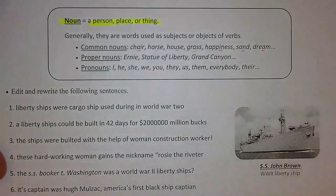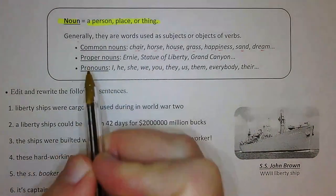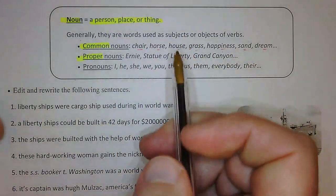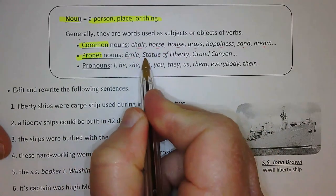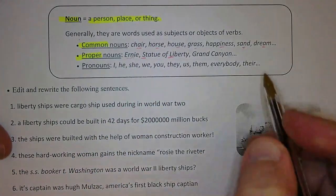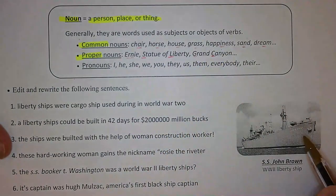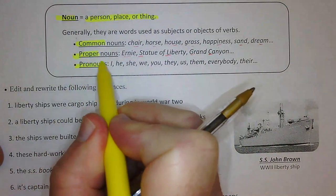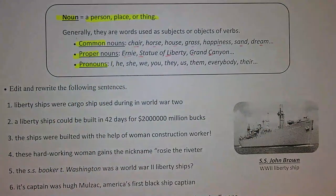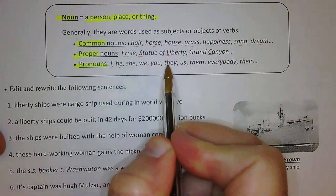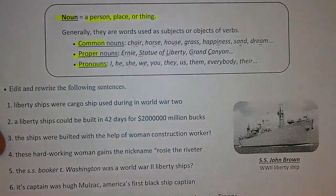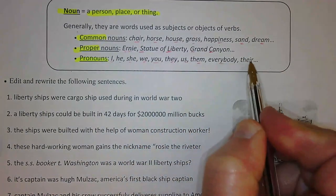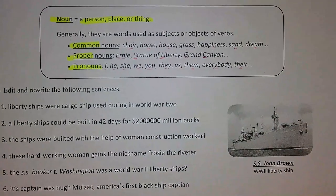But if your noun has a name, then we are going to capitalize it. These are called proper nouns. Proper nouns have names and we capitalize them — for example, Statue of Liberty, Grand Canyon. And then we have pronouns. Pronouns are the small words that don't specify who or what you're talking about — words like I, he, she, we, they, it, everybody, them. They're not giving detailed information, but they're very important in your writing.